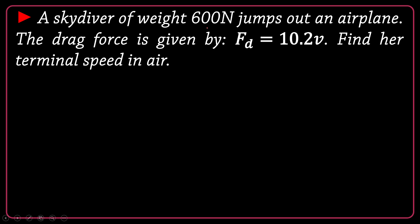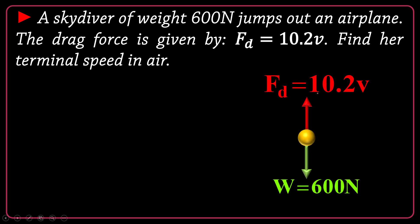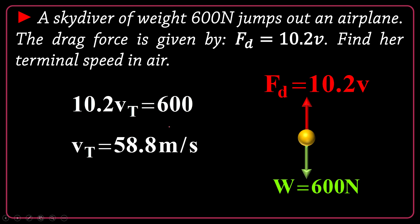Problem 1: A skydiver of weight 600 newtons jumps out of an airplane. The drag force is given by Fd equals 10.2v, so it is proportional to v with k equal to 10.2. Find her terminal speed. At terminal speed, 10.2 times v_t equals 600, so the terminal speed is 58.8 meters per second.